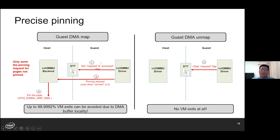Let's take a look at the process of guest DMA mapping operations. For DMA map, the guest Co-IOMMU driver will set the mapped and accessed flags in the DTT entry for each target GFN. Meanwhile, it will check the pinned status of this DMA page, and the pinning request is necessary only when the pinned flag is zero. The good news is that we found more than 99% of pinning requests can be avoided thanks to DMA buffer locality — it is very likely that a recently used DMA buffer will be reused in following DMA operations. When the guest unmaps the DMA page, the Co-IOMMU driver just clears the mapped flag in the DTT entry for the target GFN, so there is no VM exit at all.